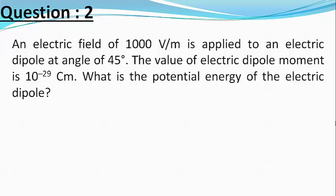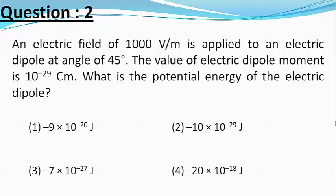The choices are minus 9 into 10 raised to power minus 20 joules, minus 10 into 10 raised to power minus 29 joules, minus 7 into 10 raised to power minus 27 joules, and minus 20 into 10 raised to power minus 18 joules.